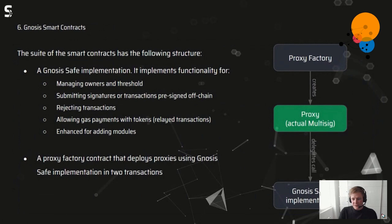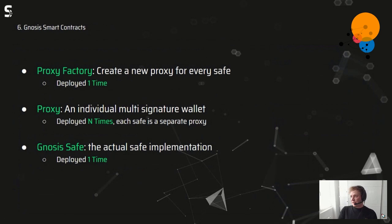To make it clearer: the proxy factory is normally deployed only once on the chain, and it creates new proxy contracts deployed N times — these are the actual multi-signature wallets. The Gnosis Safe contract is also deployed only once on the network.